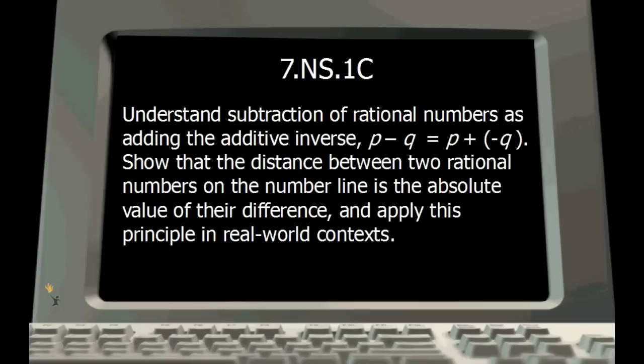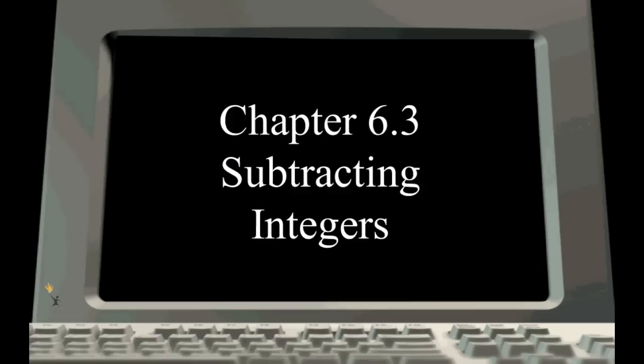We're rolling right along with number sense and we're going to start talking about subtracting integers. Here's the actual standard NS1c: understand subtraction of rational numbers as adding the additive inverse. The additive inverse is the opposite — the number in the opposite direction. We also show that the distance between two rational numbers on the number line is the absolute value of their difference, and apply this in real-world contexts. This is chapter 6.3.